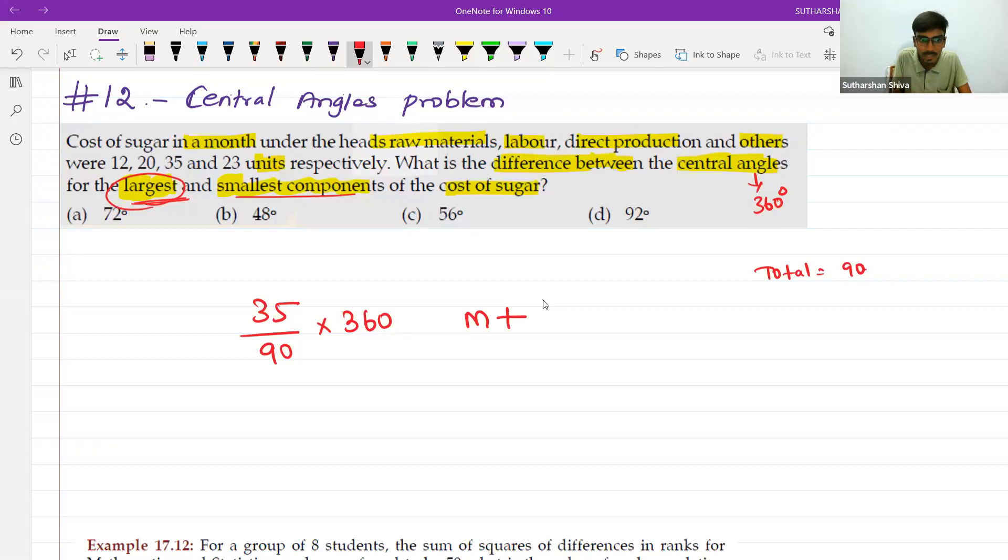Next step. What is the smallest one? 12 is the smallest one. 12 divided by 90 into 360 M minus. After that, press MRC. Then show me what it is done in your calculator.